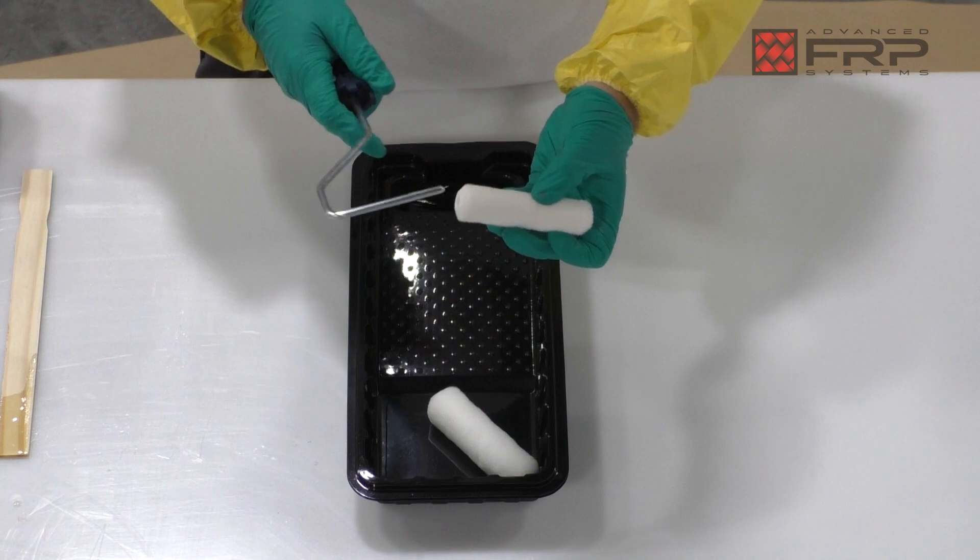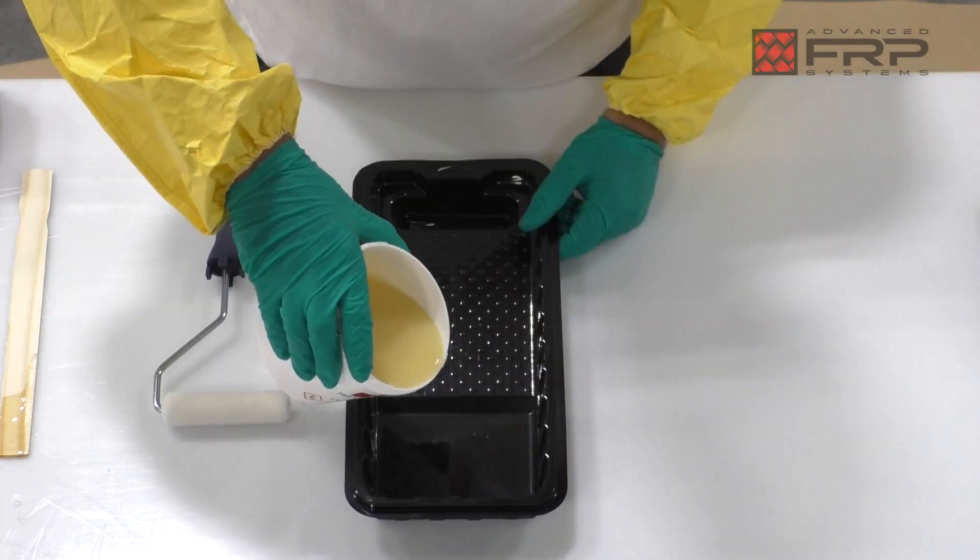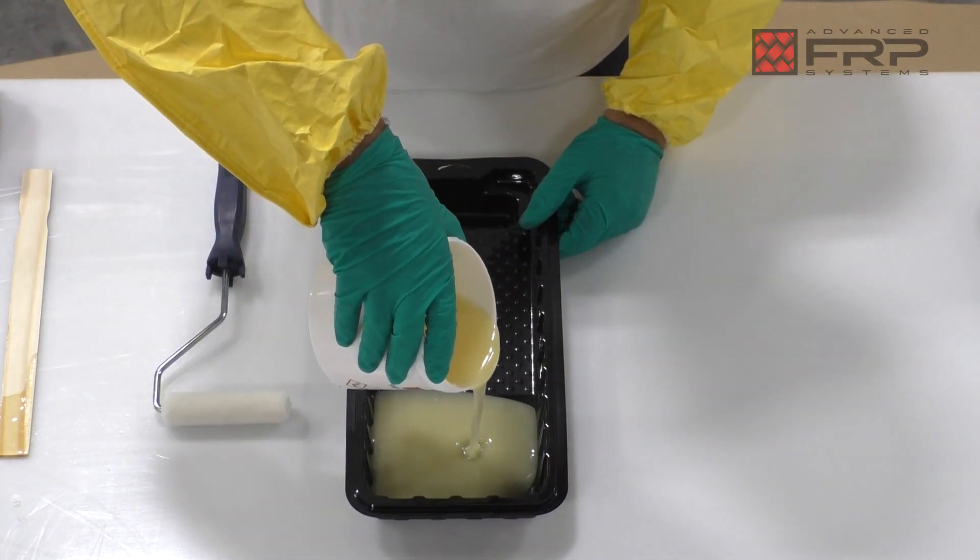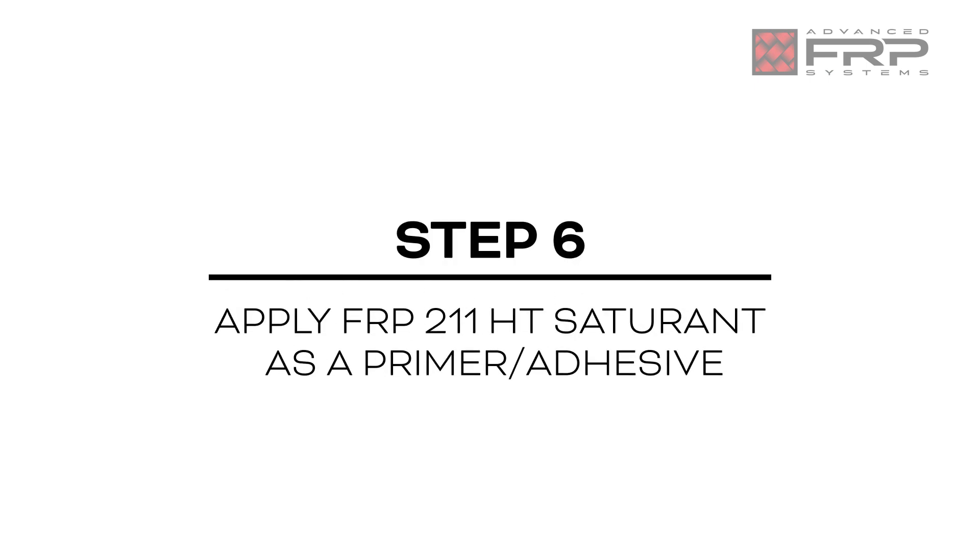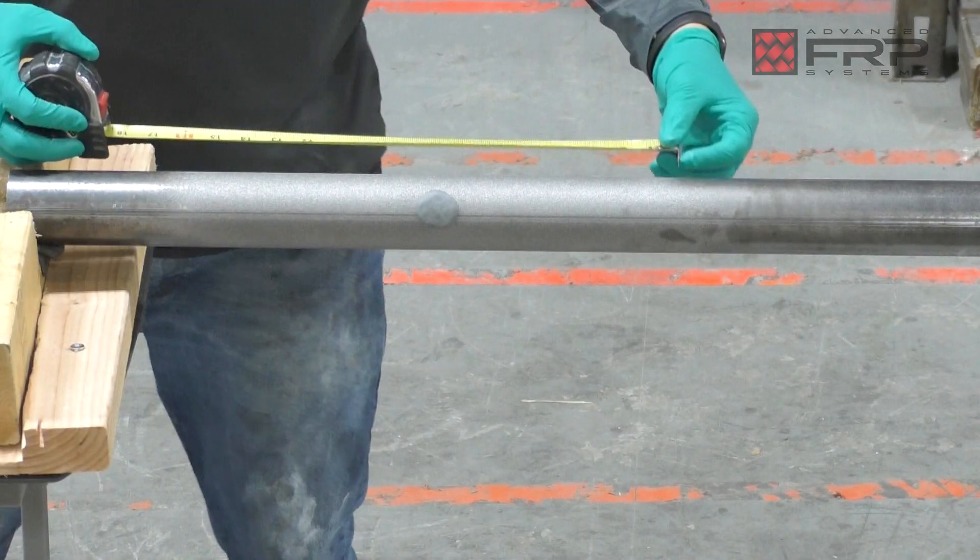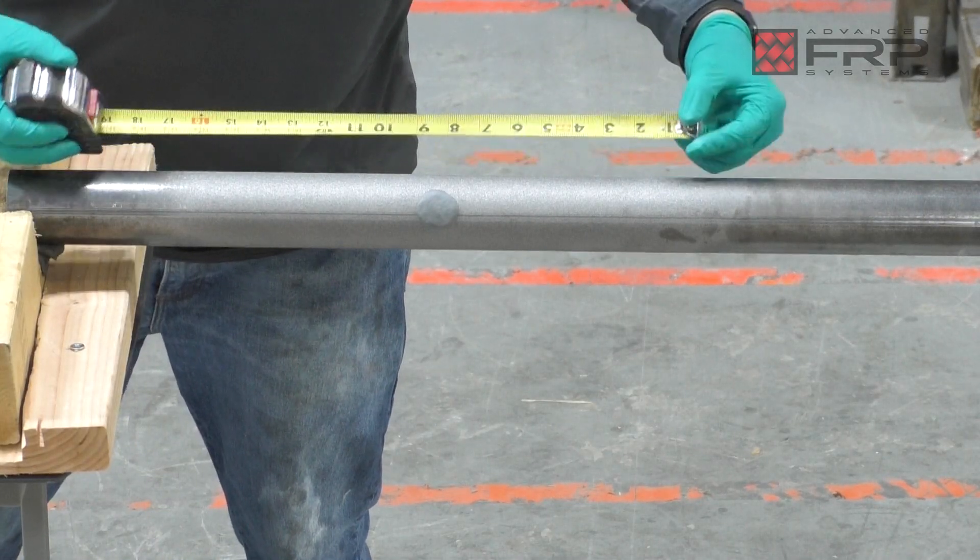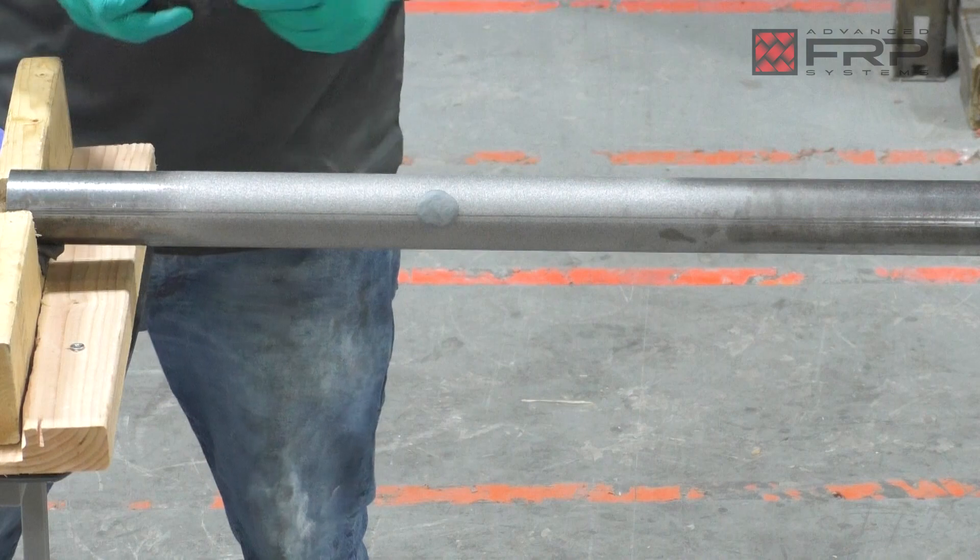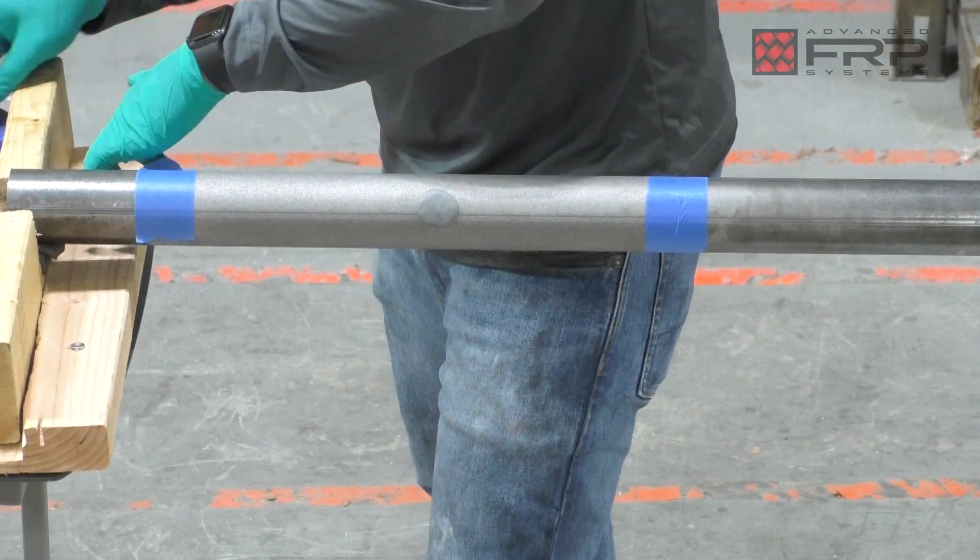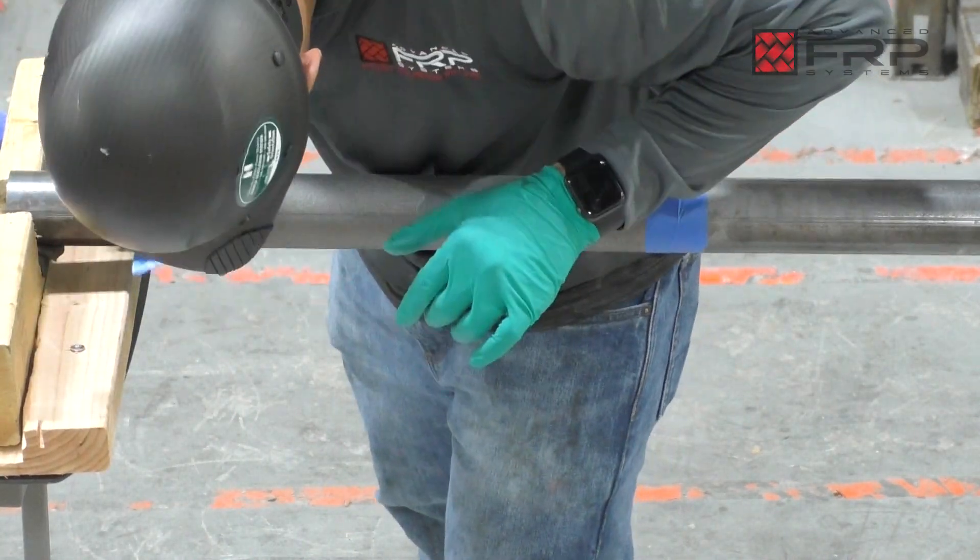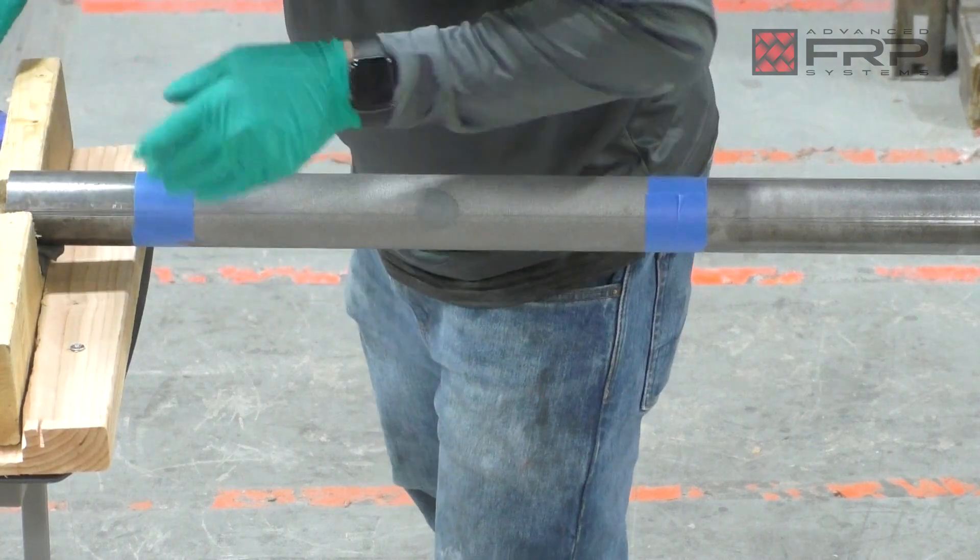Prepare the paint tray and roller with a one-fourth inch nap. Measure the entire blasted repair area and apply blue painter's tape if desired directly outside of the section to be repaired. This will help ensure a clean application of the epoxy coatings.